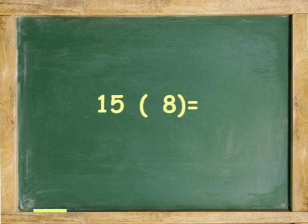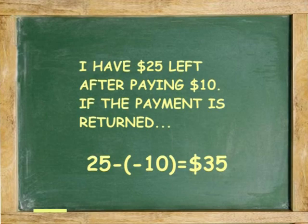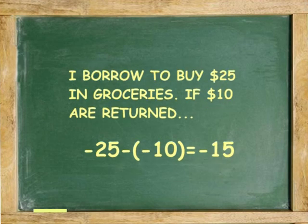Now, let's try taking away a negative number. For example, I have 25 dollars left after paying 10 dollars. If the payment is returned, 25 minus negative 10 equals 35. Let's try a variation of the same problem. I borrow to buy 25 dollars in groceries. If 10 dollars are returned, negative 25 minus negative 10 equals negative 15. Notice that because there is a benefit from taking away a negative, the result of negative times negative is positive.